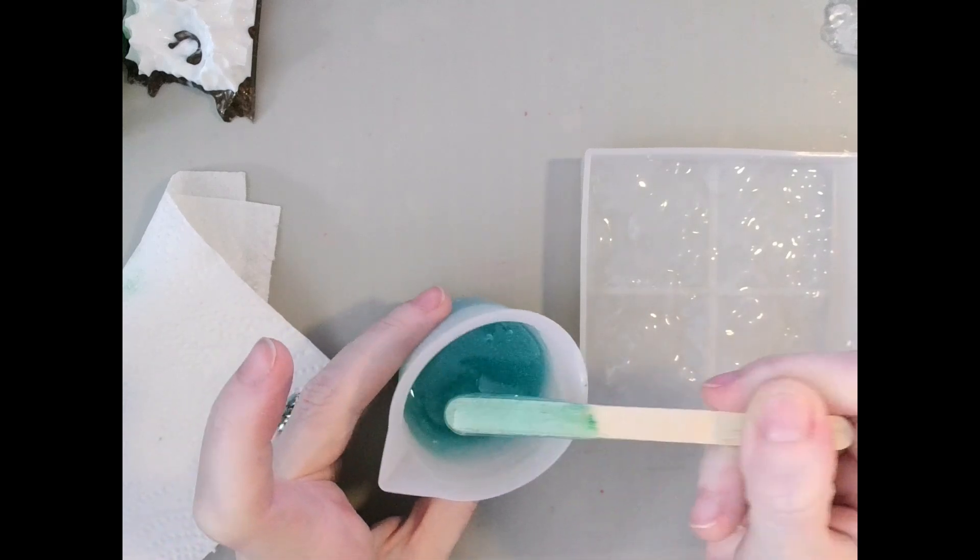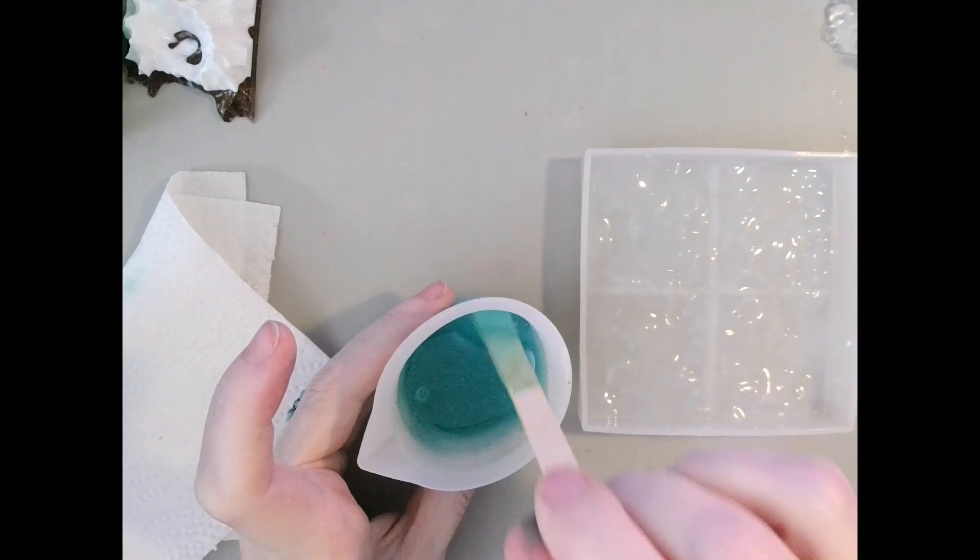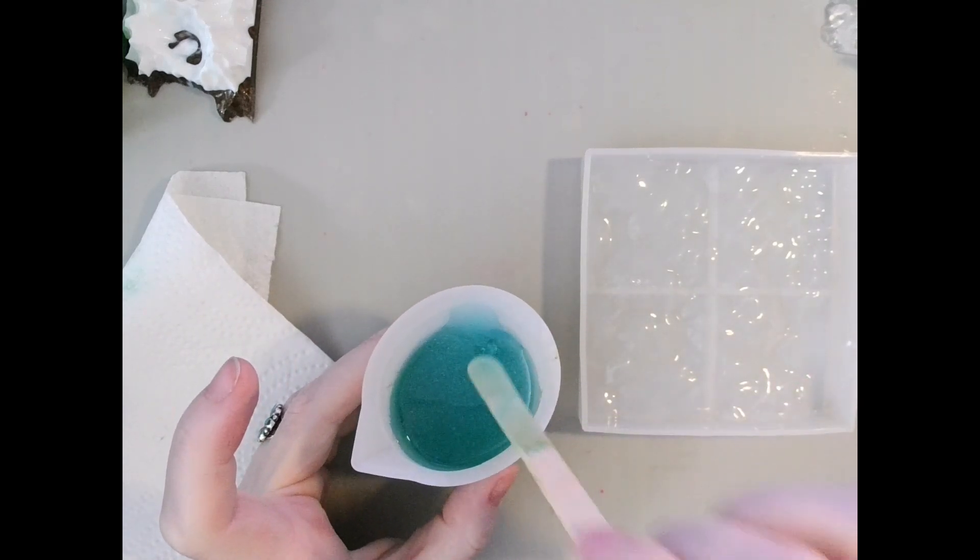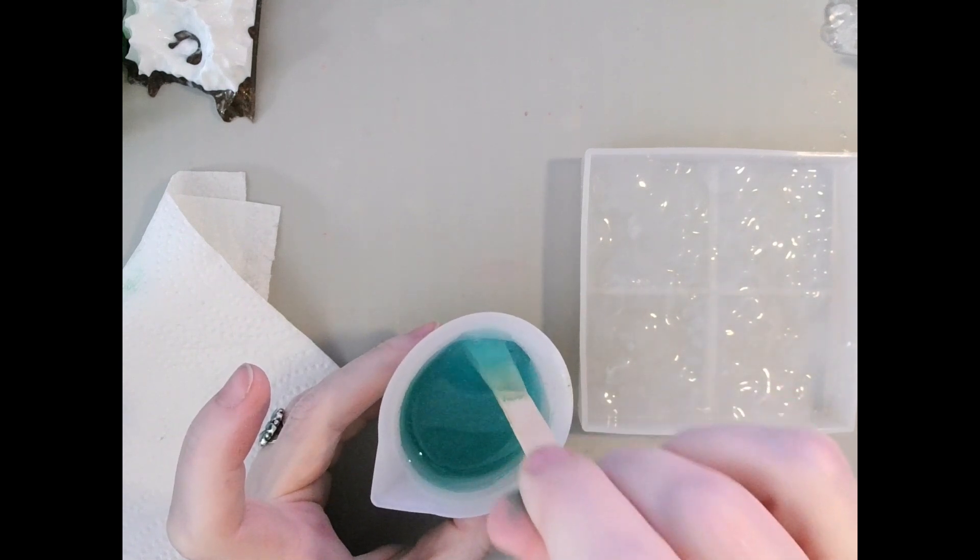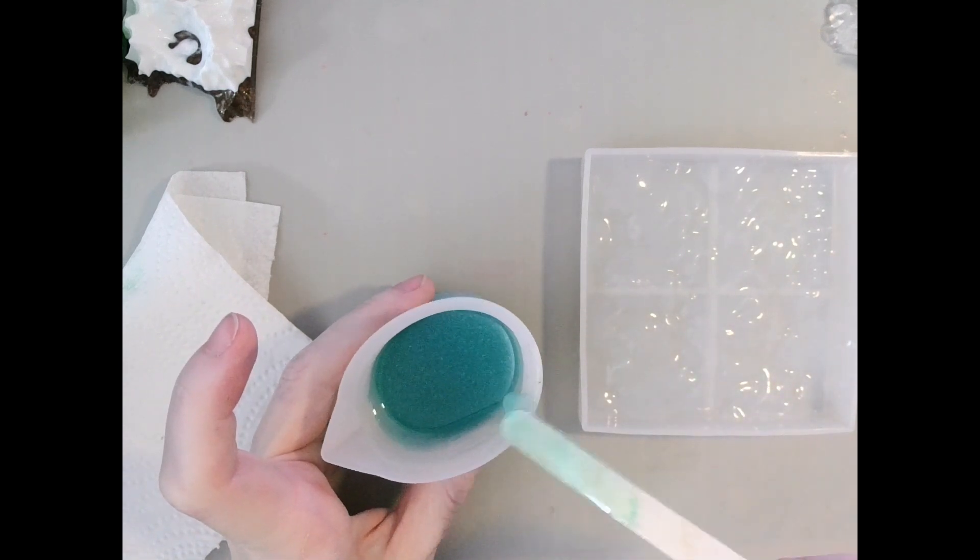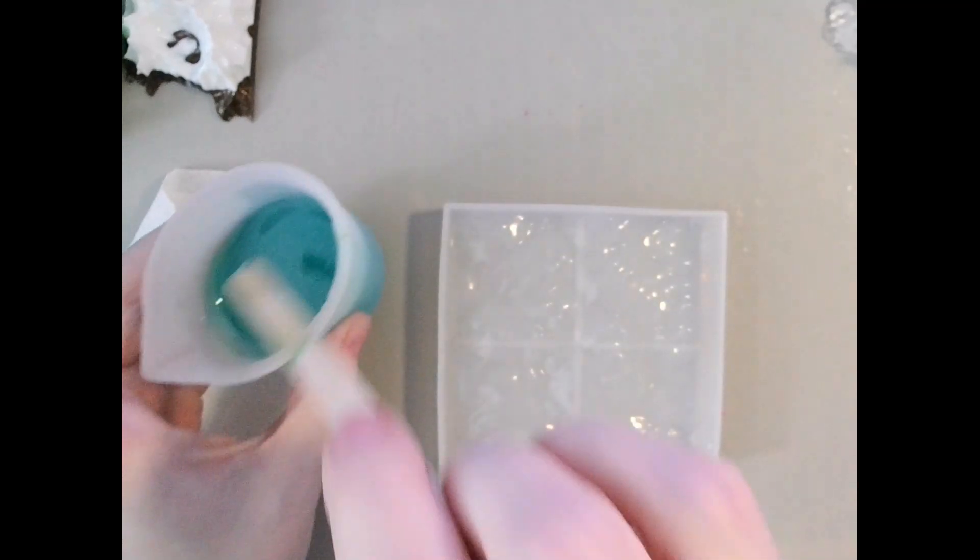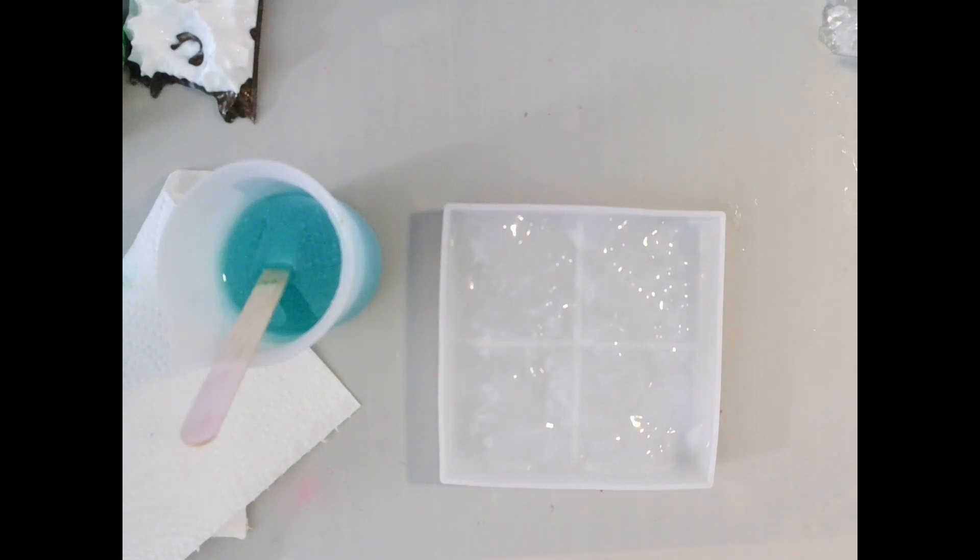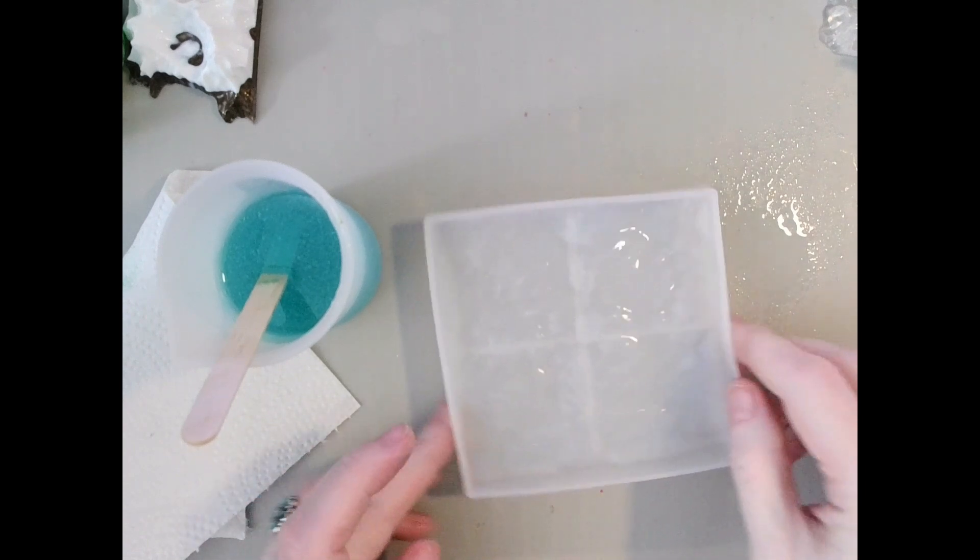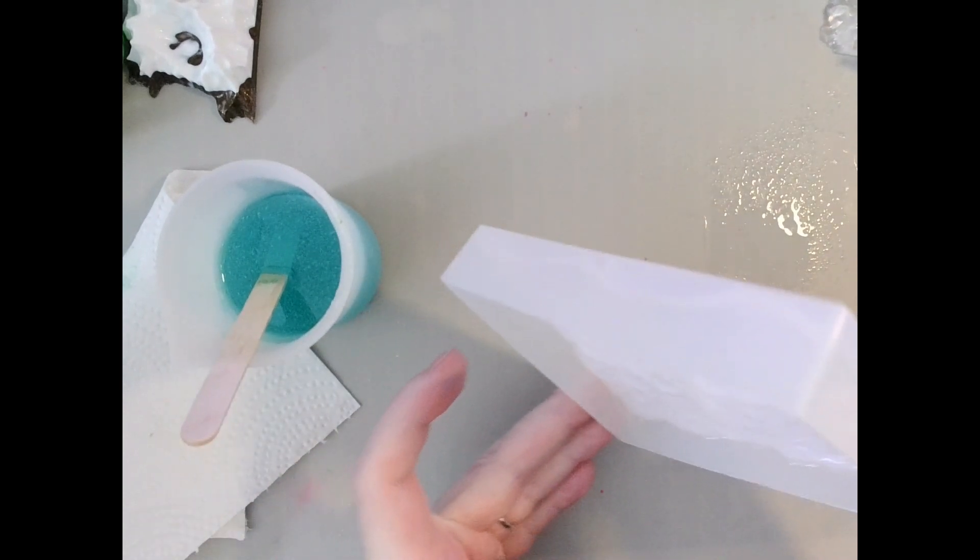I actually really dig that color. I don't want it super dark because in the deeper spots of the mold it's going to be darker, and in the more shallow spots it's going to be lighter. I'm just going to give it a spritz to try to keep the bubbles away.